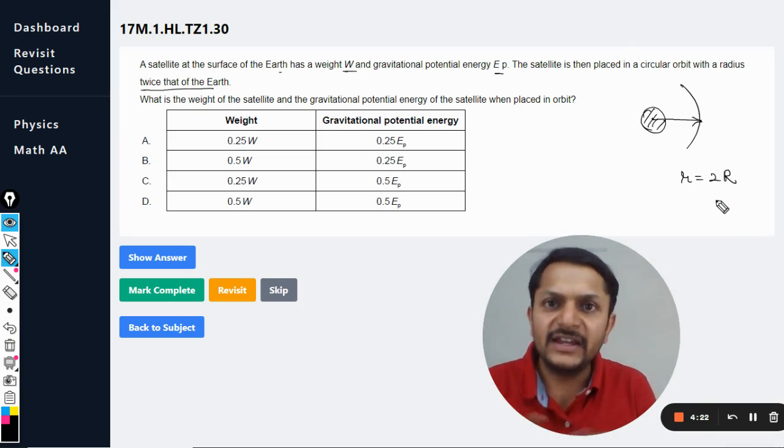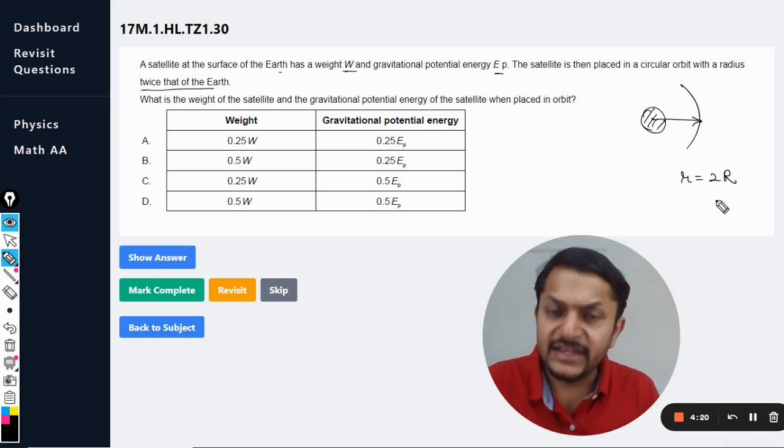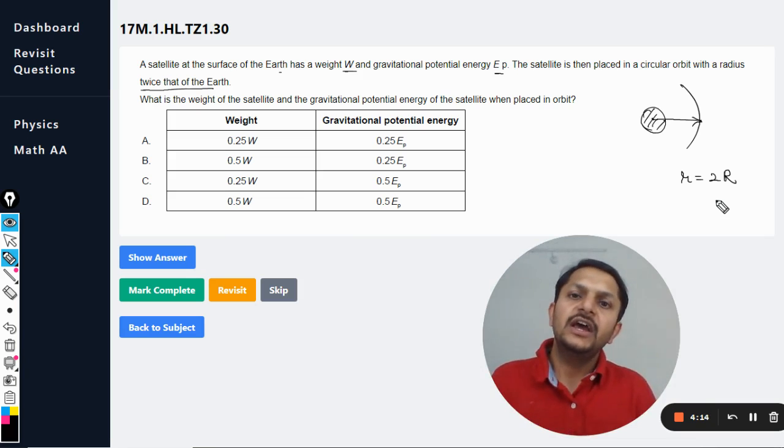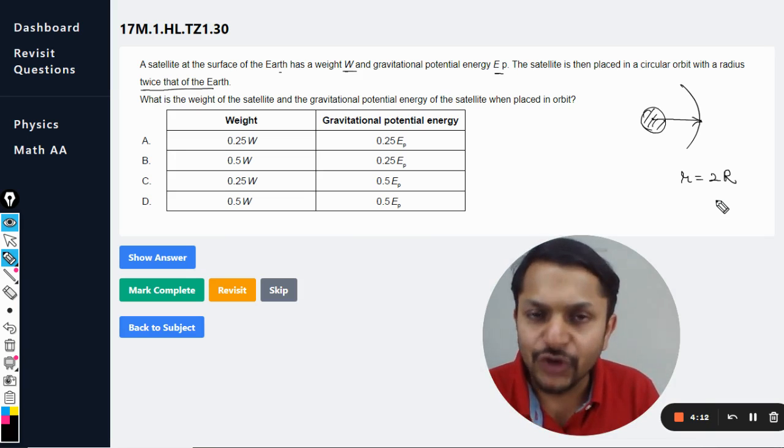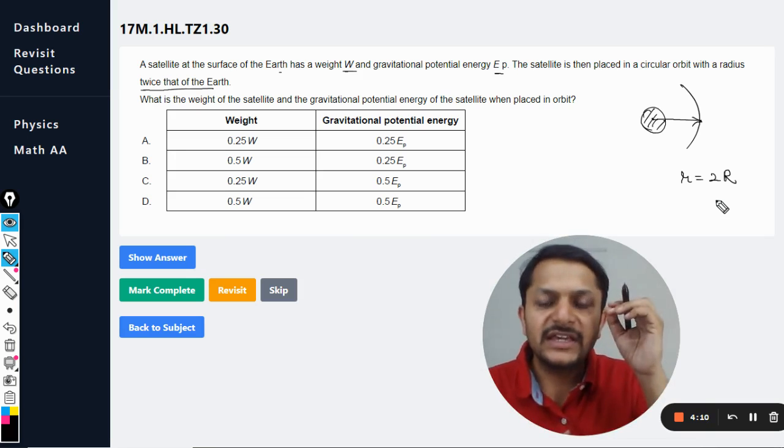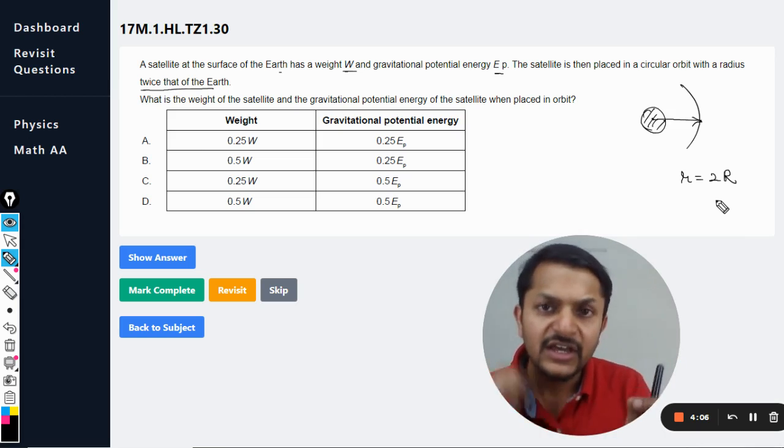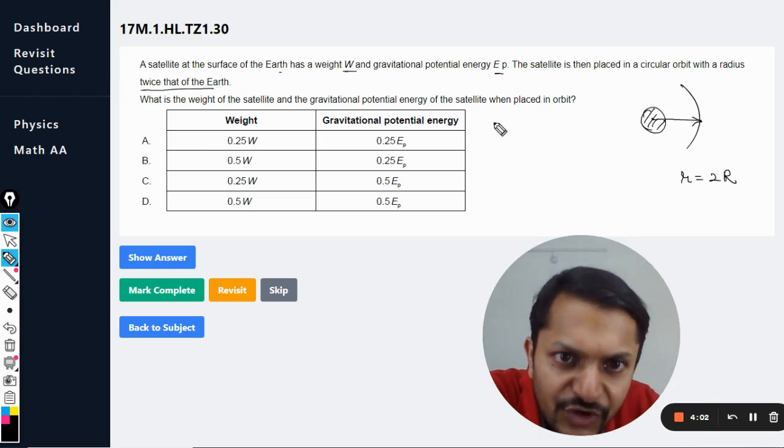Now you want to find the weight. Weight is defined as mathematically the product of mass and the acceleration due to gravity or the gravitational field strength. Now the mass of the satellite is not going to change, but the acceleration due to gravity or the gravitational field strength is definitely going to vary.